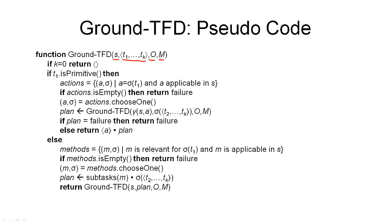The outline of the procedure follows exactly the definition we've just seen. First we have the case where we deal with an empty task network as input — the simplest case where k equals 0, meaning we have no tasks in our initial task network. That means the empty plan is a solution for this task network, as given in the definition.